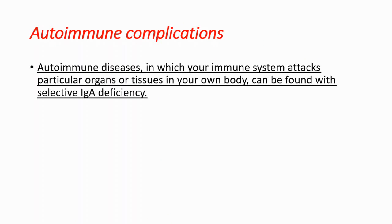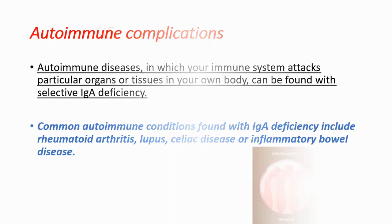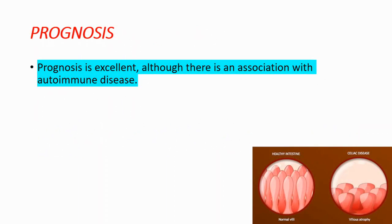Let's talk about autoimmune complications. Autoimmune diseases, in which your immune system attacks particular organs or tissues in your own body, can be found with selective IgA deficiency. Common autoimmune conditions associated with IgA deficiency include rheumatoid arthritis, lupus, celiac disease, and inflammatory bowel disease.